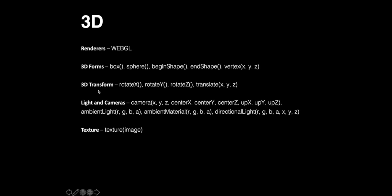There are transformation functions we're going to play around with today, including rotateX, rotateY, and rotateZ. For the translate function, we're going to talk about the x, y, and z values you can pass into it. Up until this point we've only been working in a 2D environment, but now we're going to be playing around with the z-axis — the depth.